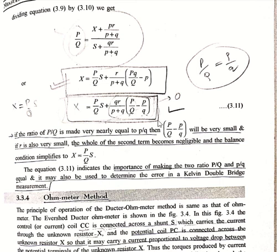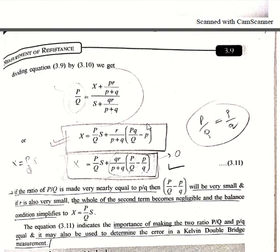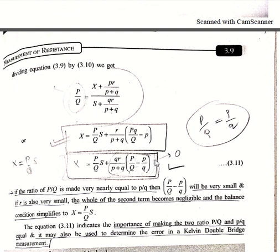This equation highlights the importance of making the two ratios P/Q and p/q exactly equal. It may also be used to determine the error in Kelvin's Double Bridge method. This is the exact equation where lead resistance is considered. If the lead resistance is negligibly small, or if the two ratios are made exactly equal, then the lead resistance term is negligible. If the ratios are not equal, there will be some error, and the correction factor equation should be used.